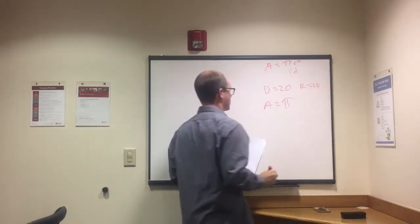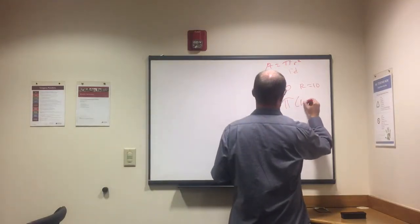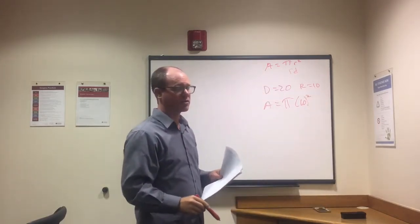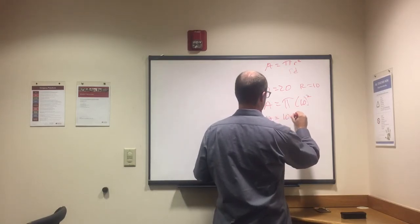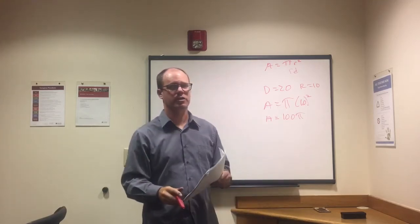So if the diameter is 20, radius is 10. Area equals pi times 10 squared. We're almost done. All that's left is 10 squared equals 100, and the area then equals 100 pi.